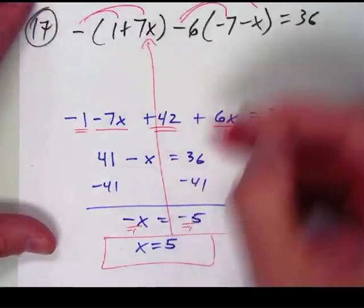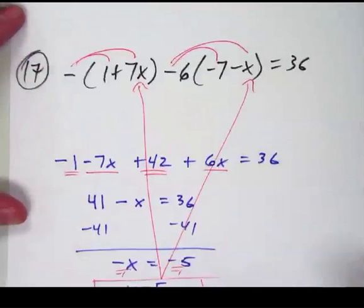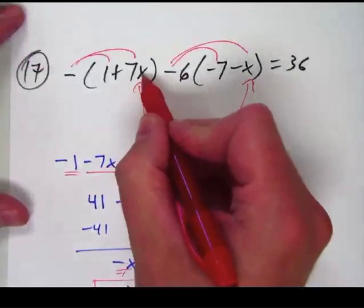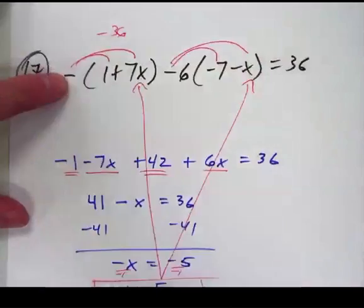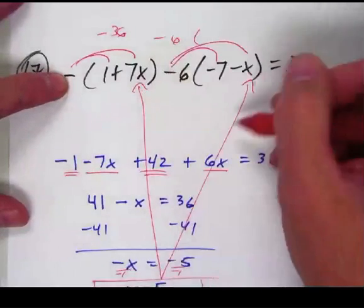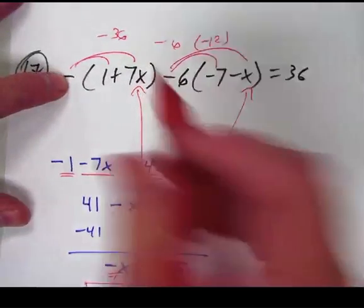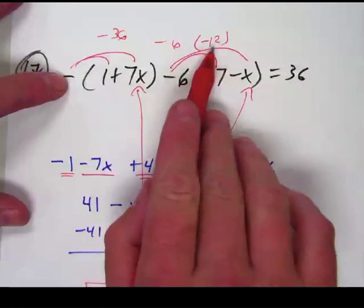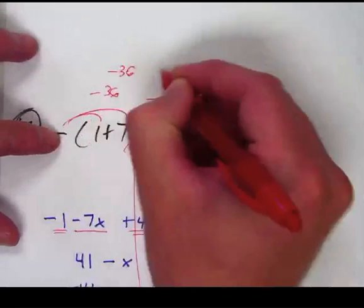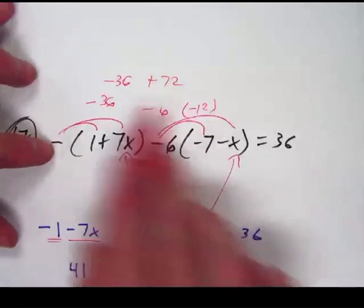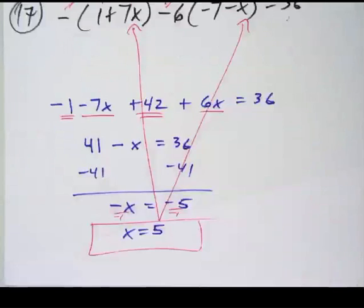You can check that — take the 5 and put it in for x and make sure it works out. So 7 times 5 is 35, plus 1 is 36, and because of the negative sign that becomes negative 36. Then minus 6 times 5 would be negative 12, and a negative times a negative is positive 72. So I've got negative 36 plus 72, which is positive 36 — so it does work, and the answer is positive 5.